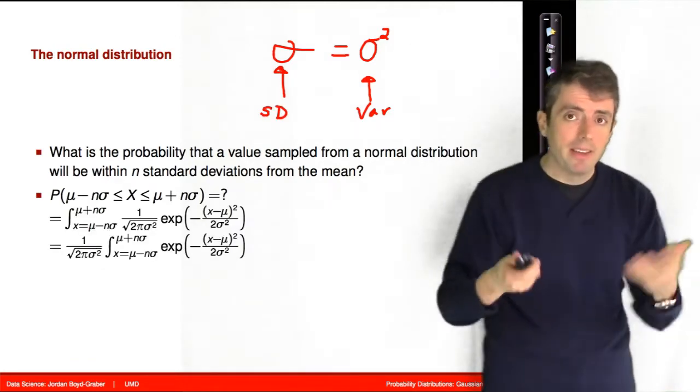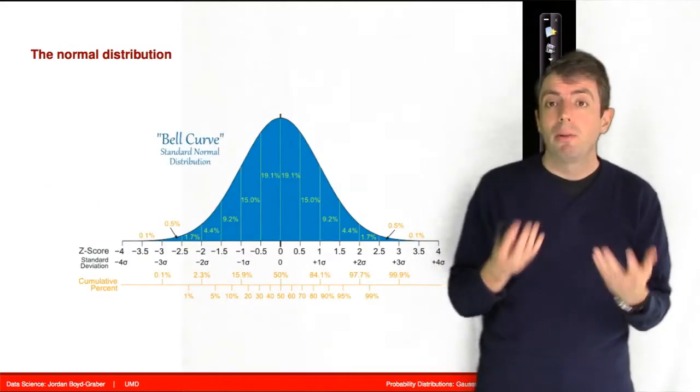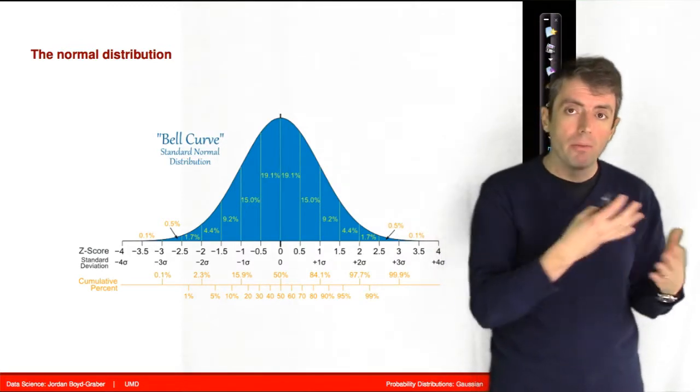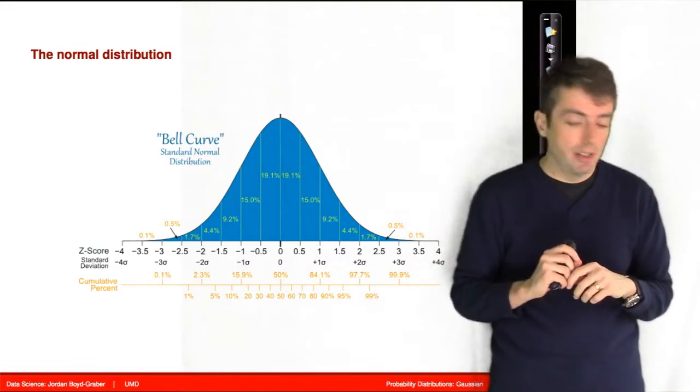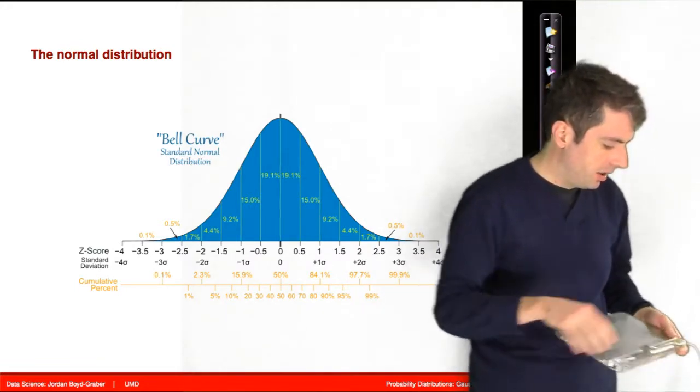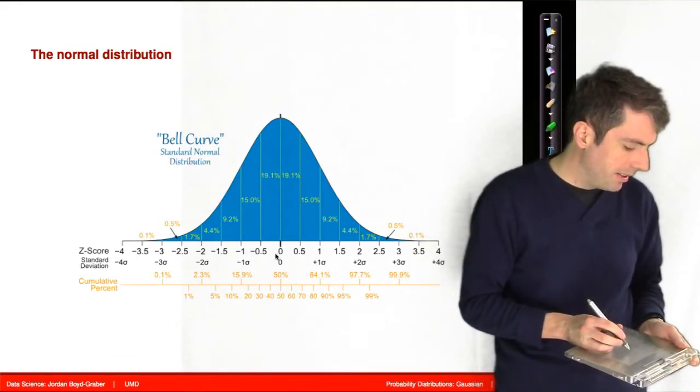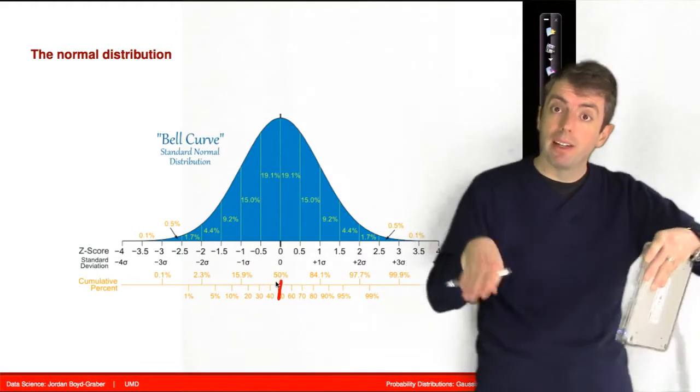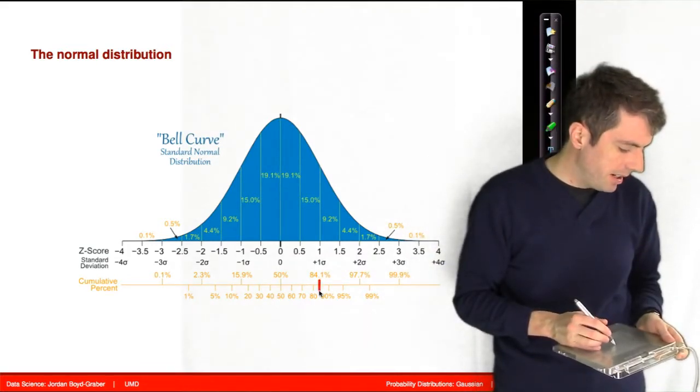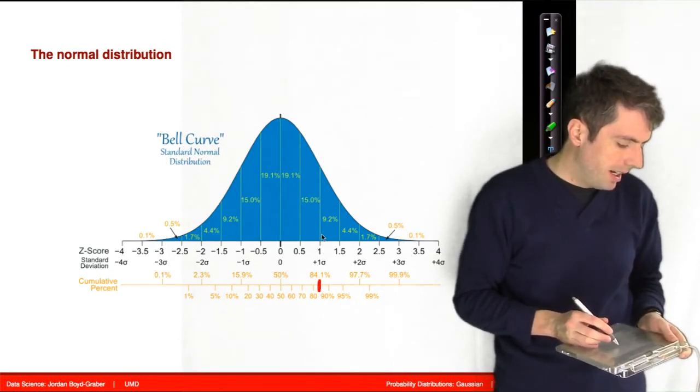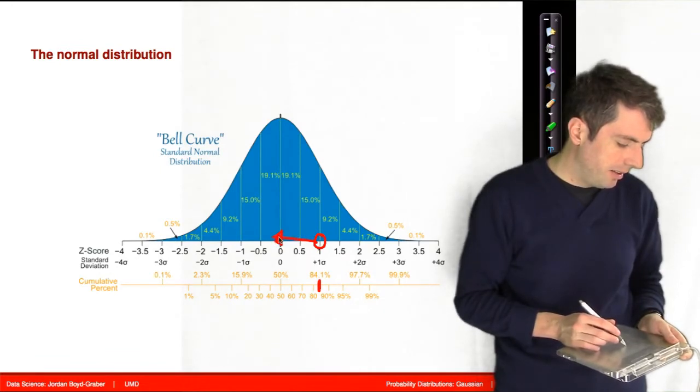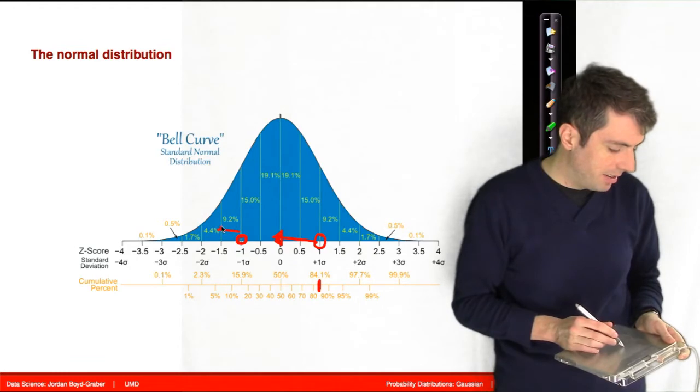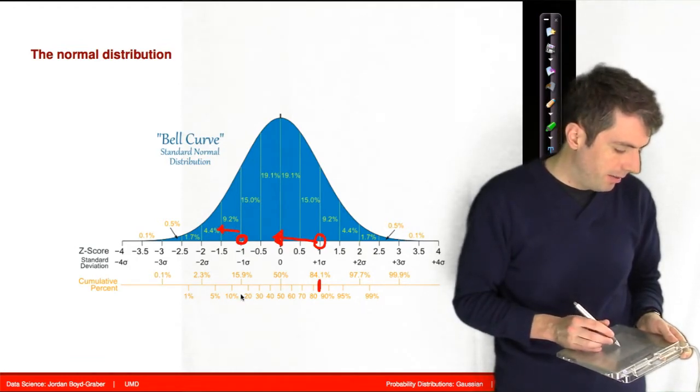So you can work out the math and compute an integral, but nobody does that. Not even people who like taking integrals. What they do instead is they look it up on a chart or they plug it into their favorite programming language. You can read off the probability of landing in particular ranges. Here is a chart that shows the standard normal distribution. The probability of getting a value less than or equal to zero is 0.5, which makes sense because it's balanced left and right. If you're at one standard deviation, the probability of getting a value anywhere to the left of one standard deviation above the mean is 84.1%.